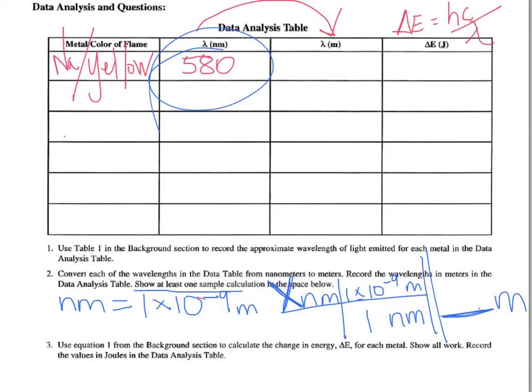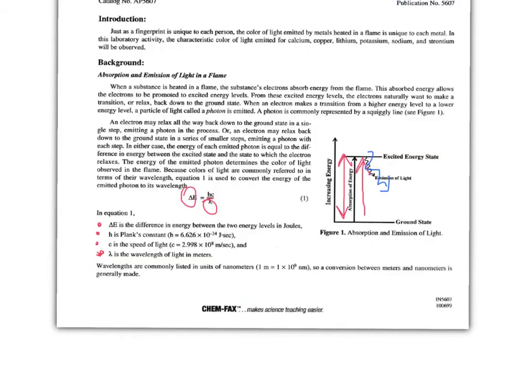It says, notice that you need to show at least one sample calculation. But, after that, what you're going to do is calculate delta E. If you look back at the formula on the first page, right here, delta E, which is the change in energy, and I remember we drew this arrow to show change of energy, is equal to hc, h is Planck's constant, c is the speed of light, divided by the wavelength of light in meters. You've already converted to meters, and now it's just a matter of figuring out the change in energy.